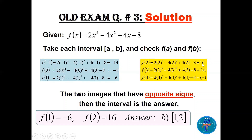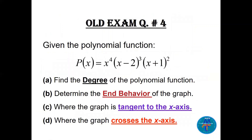f(2) is positive 16; f(3) will be bigger so I just marked it positive; f(4) positive — I only need the sign, not the value. f(1) is minus 6 and f(2) is 16, so between 1 and 2 there is at least one real zero where the graph crosses the x-axis.